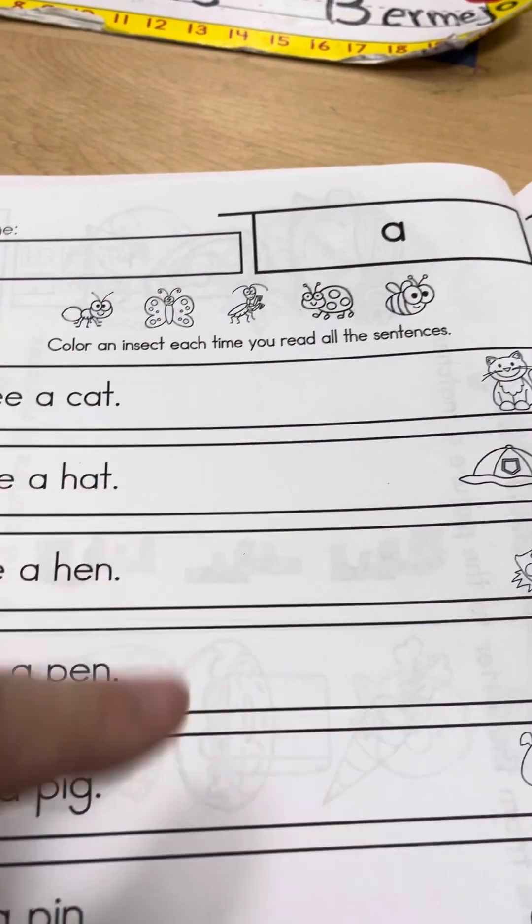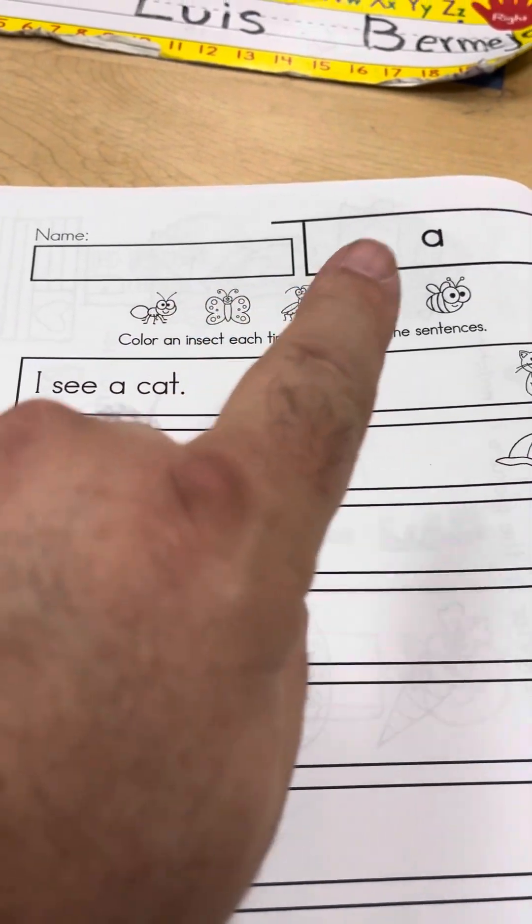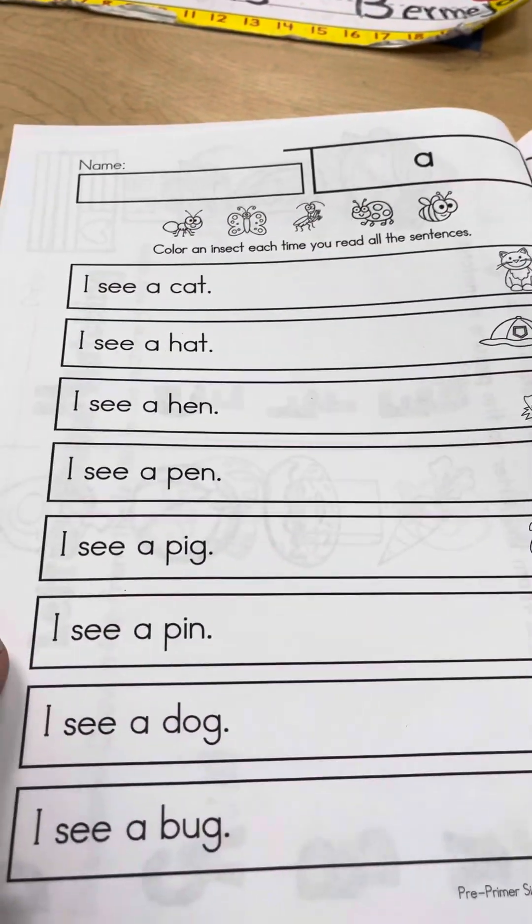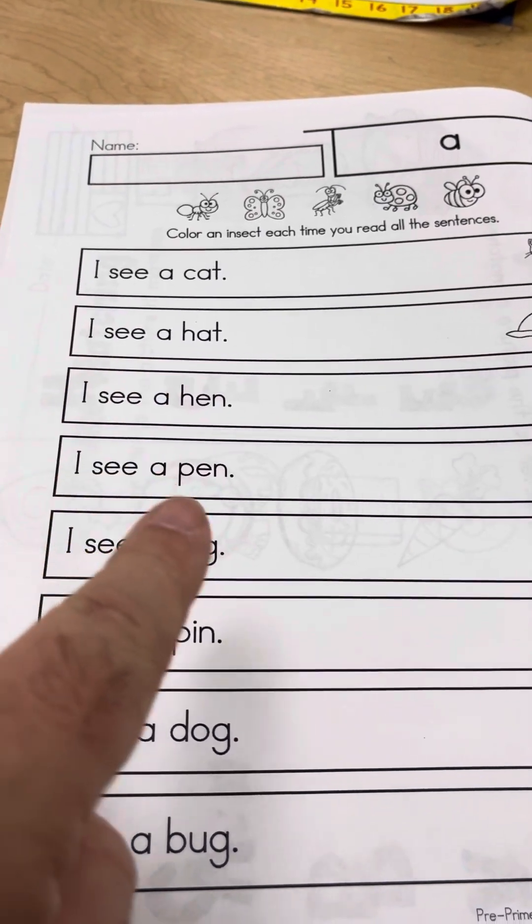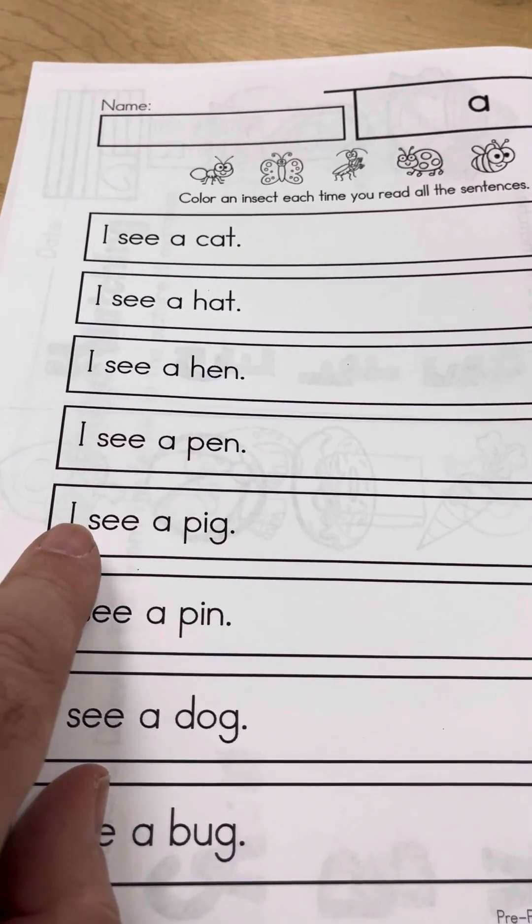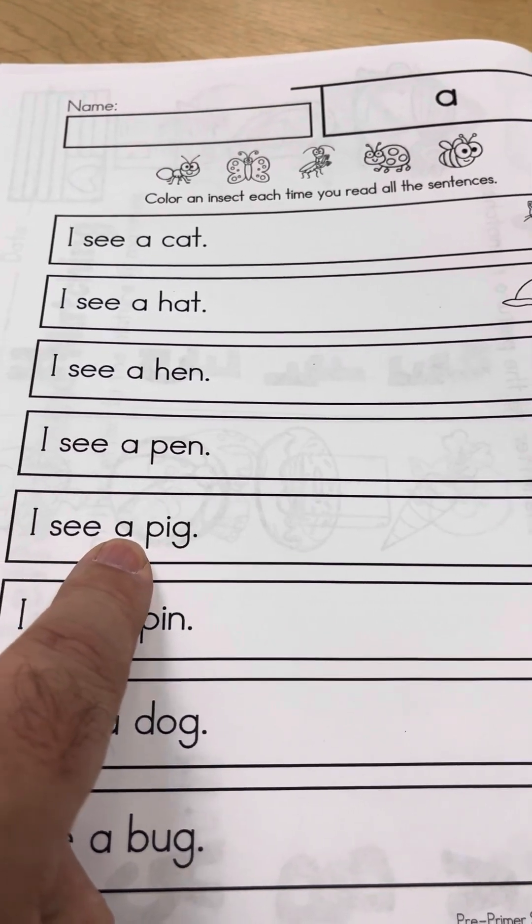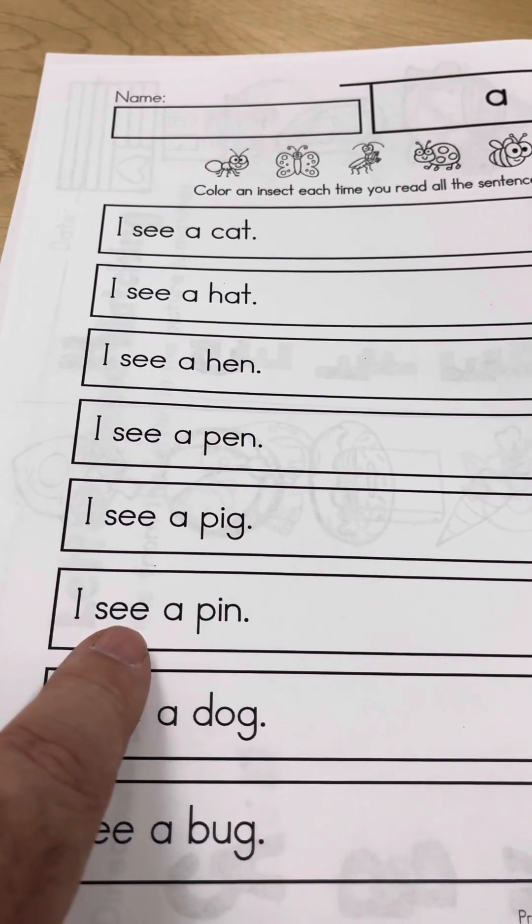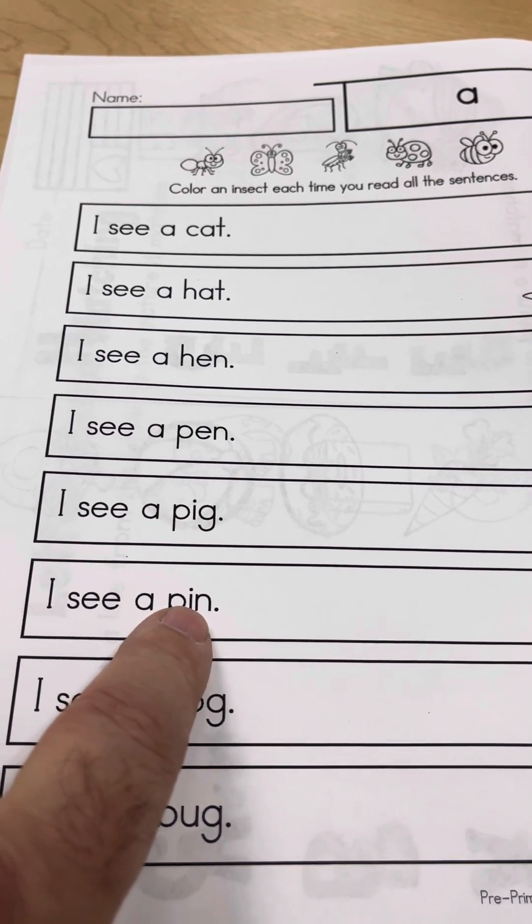Each time you read them all, you color in one animal. So you're going to read all this with them one, two, three, four, five, six different days. Right? So once per day, they sit down and they read you these sentences, pointing at each word as they say it. I see a pig. I see a pin.